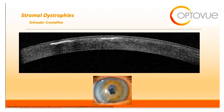The last stromal dystrophy I will discuss is central crystalline dystrophy of Schneider. This appears clinically as fine yellow-white anterior stromal crystals located in the central cornea. On OCT, you will see dense hyper-reflective tissue more visible in the anterior stroma, with the epithelium and Bowman's membrane being spared.